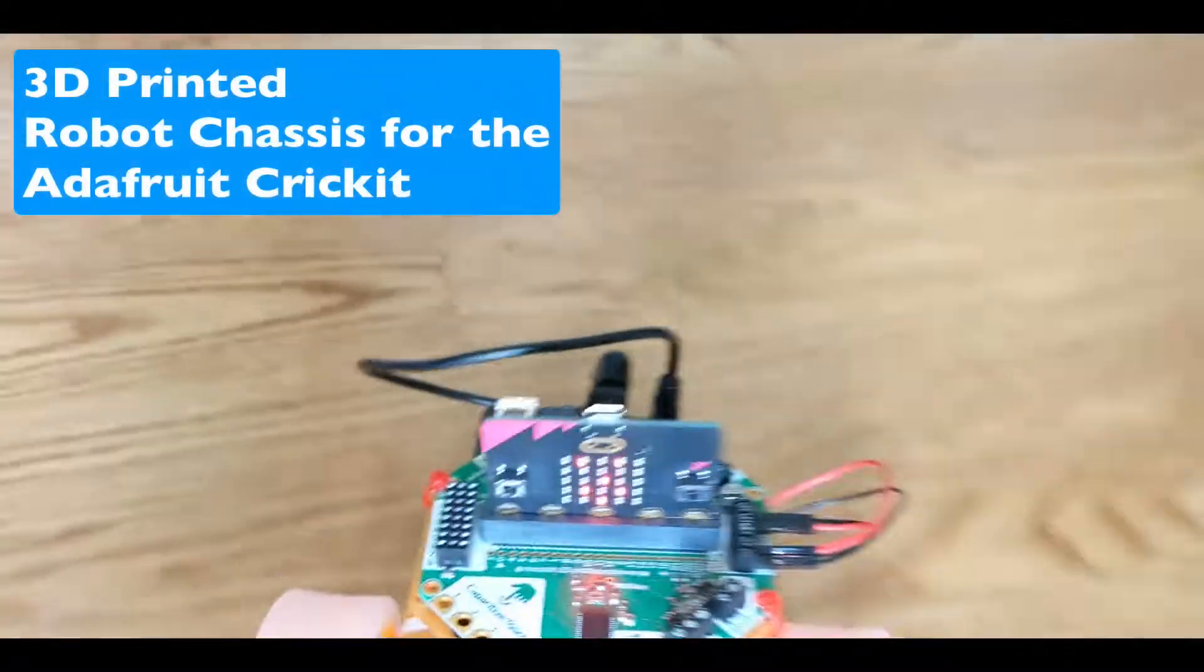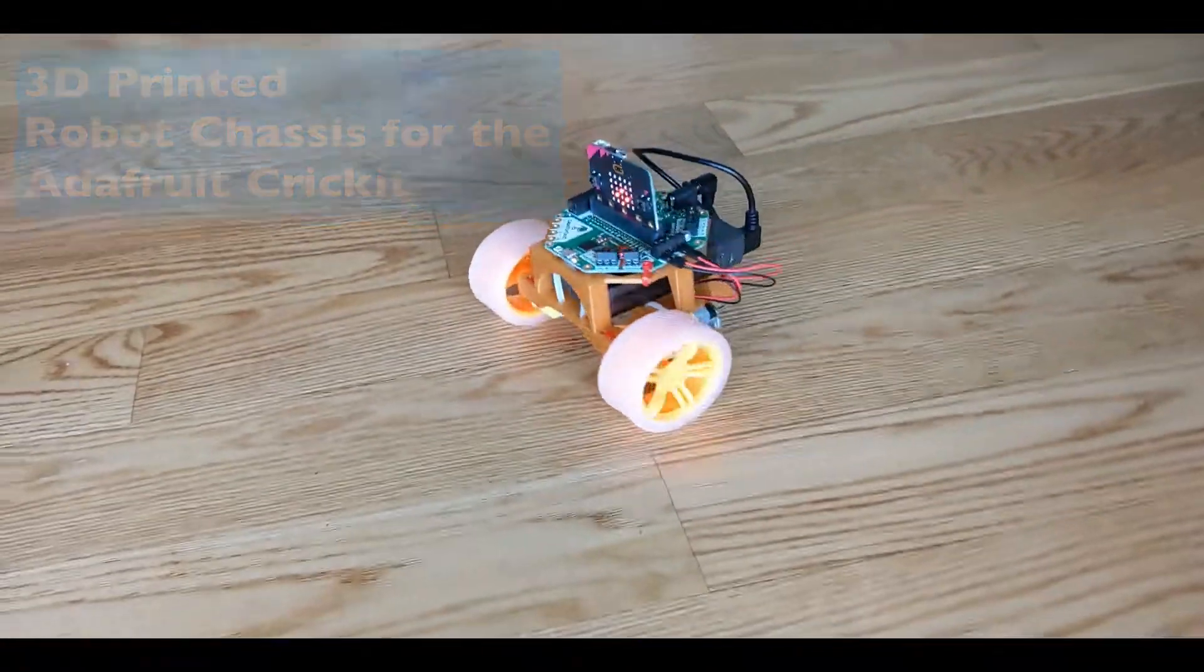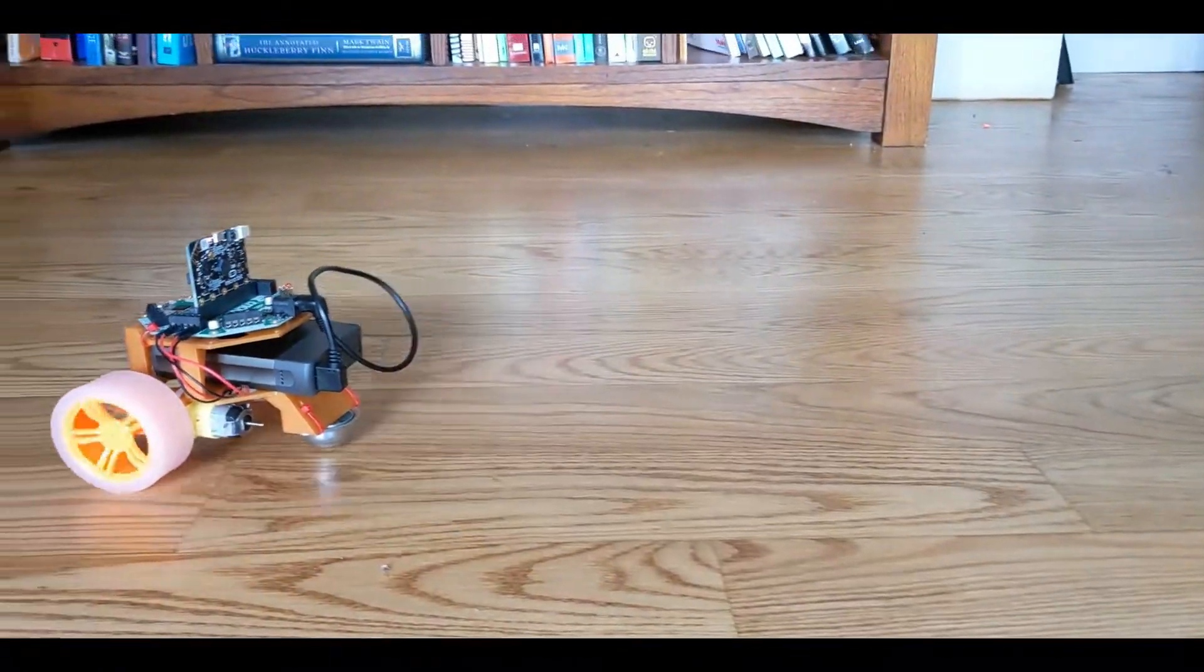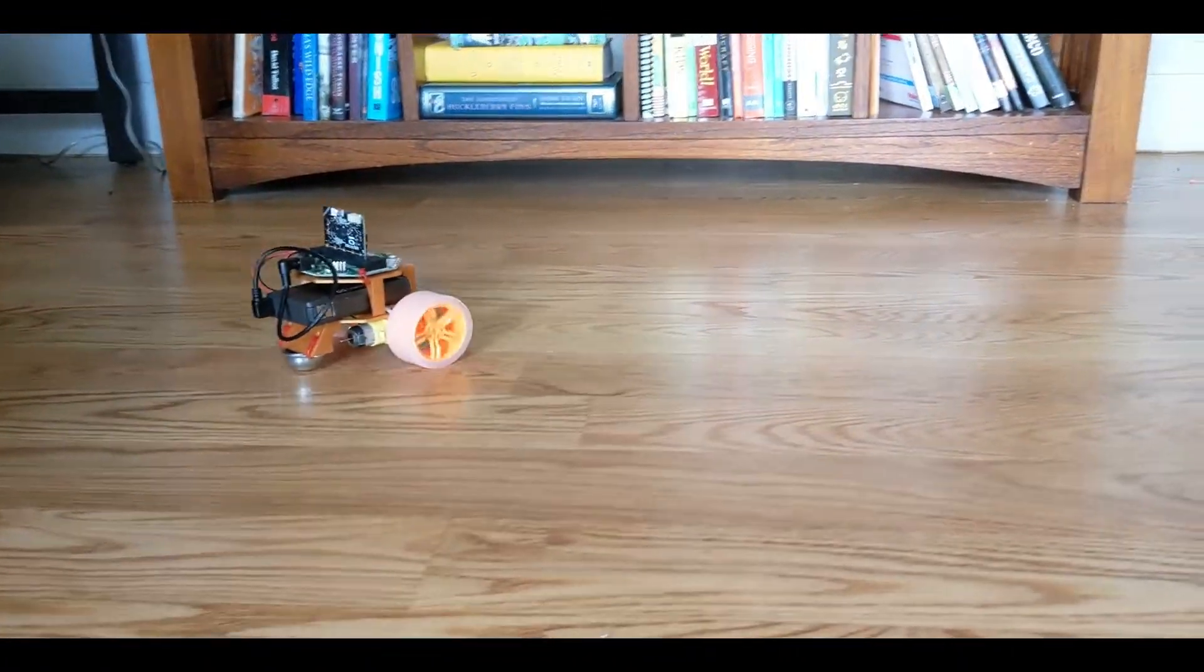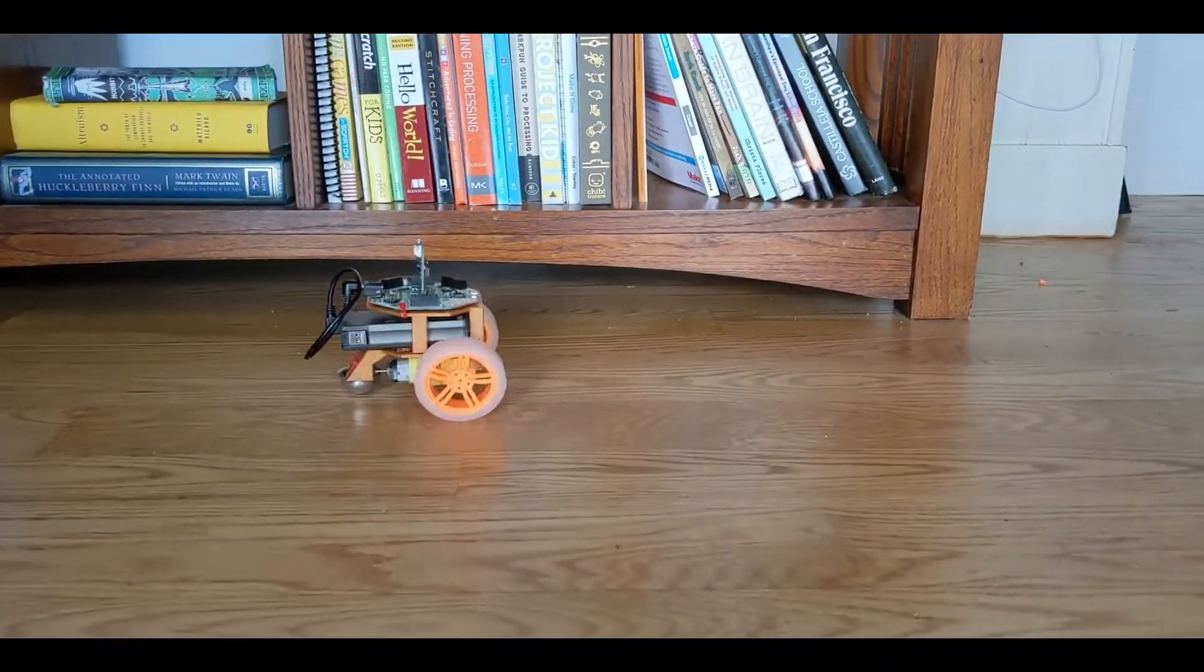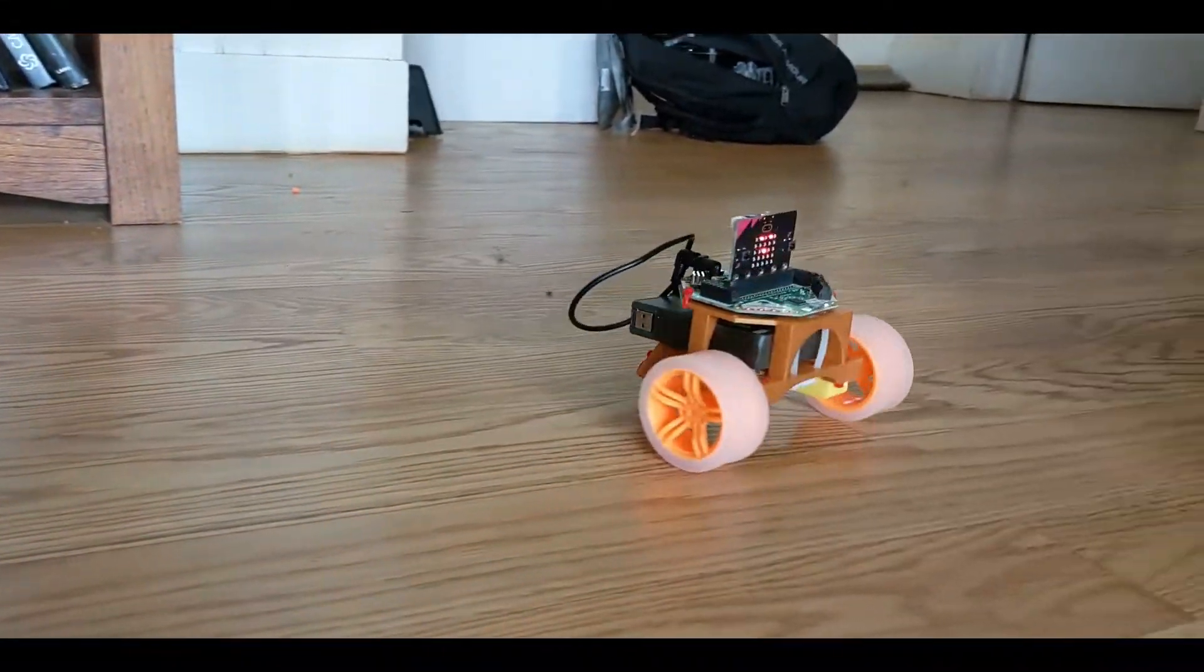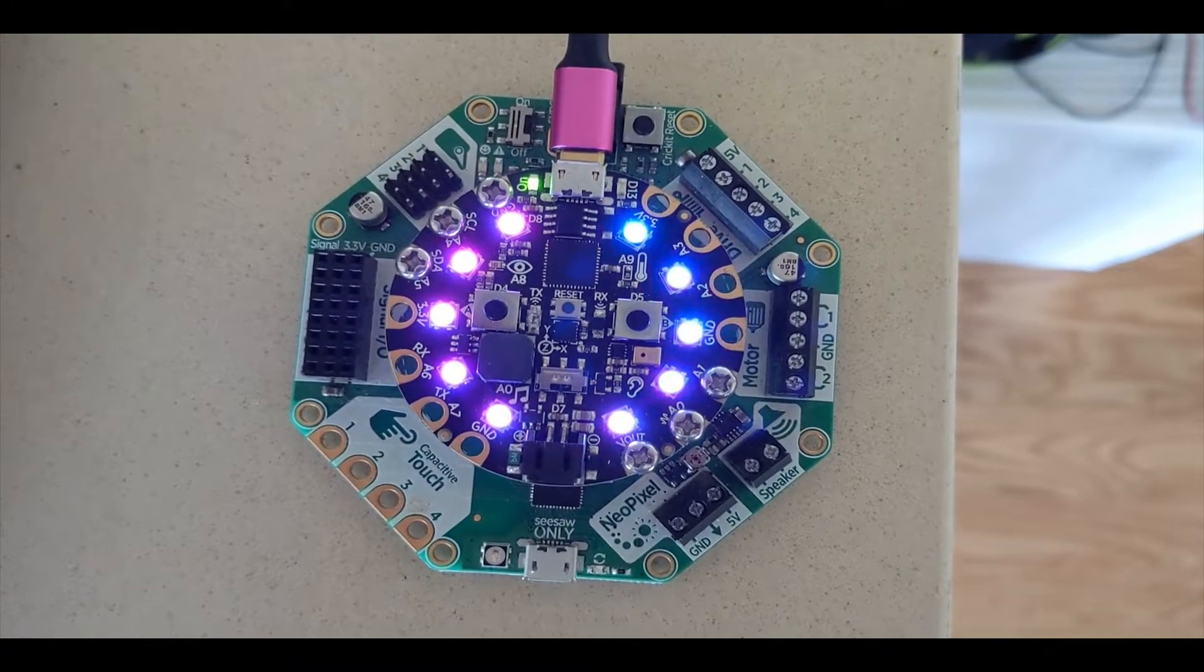Here's an introduction to a 3D printable robot chassis designed for the Adafruit Cricket boards. These are boards that help you drive motors and servos with either the Microbit, the Circuit Playground Express, or other devices.